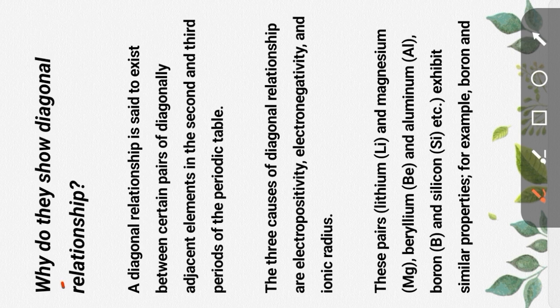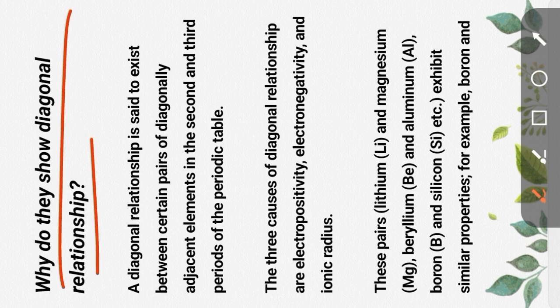Why do they show diagonal relationship? A diagonal relationship is said to exist between certain pairs of diagonally adjacent elements in the second and third periods of the periodic table.